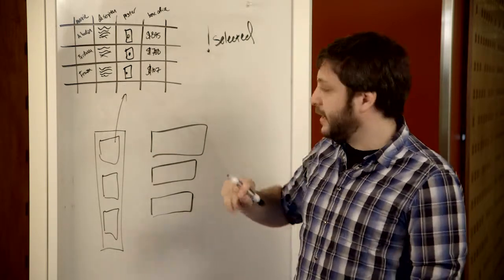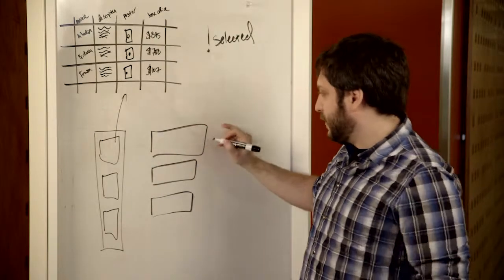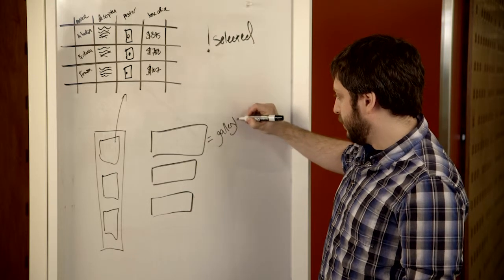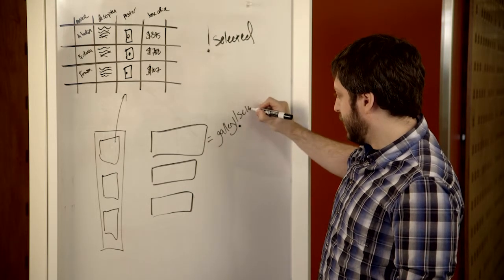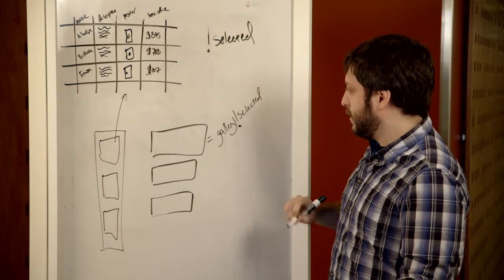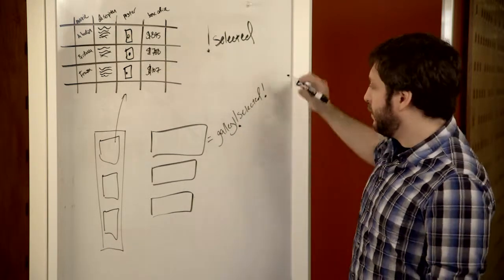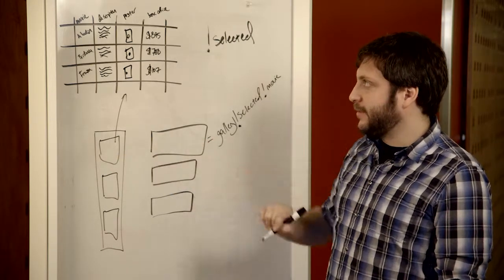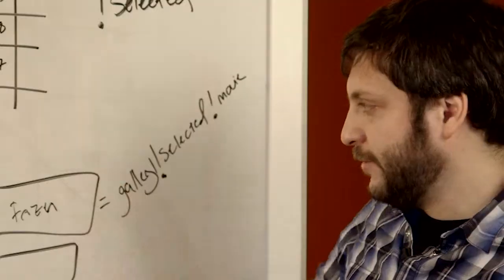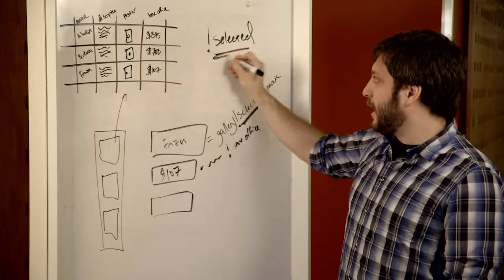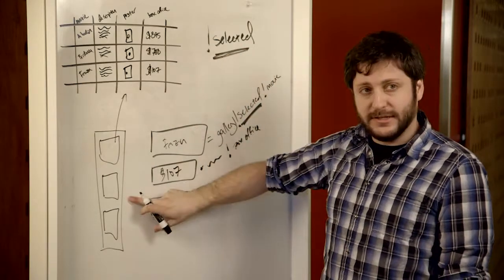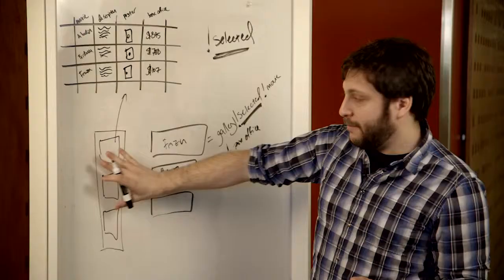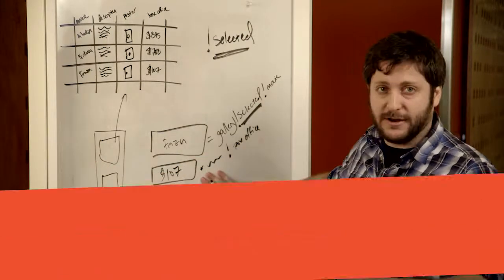What that looks like is I come in and I'll say the property here is equal to Gallery1.Selected and then bang Movie. And now when I click on this, this label is going to say 'Frozen' if I click on the Frozen poster. With this very simple concept of selected and galleries you can start to build up a really complex app — looking at master information on the left and the details of that record on the right.